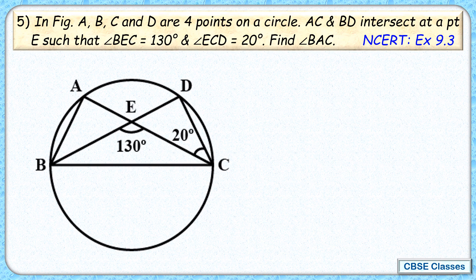Fifth question. It's a simple question. The figure is already given. Given are A, B, C, D - four points on the circle. Chords BD and AC are intersecting at point E.